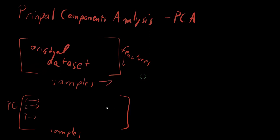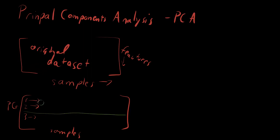Where this gets useful is that at some point, because this is in order of decreasing variance, you can cut off your analysis and limit yourself to a restricted matrix of data that now only contains, for example, two PCs. And if these two PCs capture a large fraction of the original variance of the data, then you don't have to worry about a multidimensional system anymore. You only have to worry about a two-dimensional system to analyze and understand what's going on in this data.